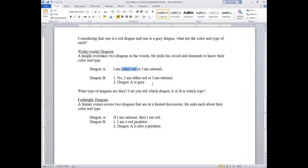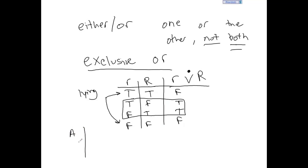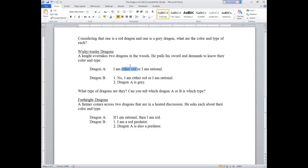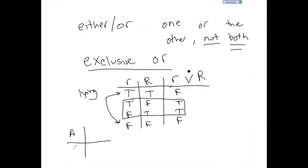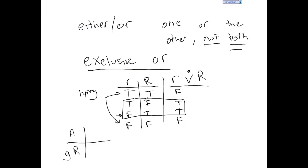He's saying he is either one or the other. If you're lying — if you're not exclusively one or the other — you fall into one of the other cases. If Dragon A is telling the truth, then he is only red or only rational. Suppose A is rational — that falls under the third line, so he's telling the truth. That would make him gray, because he's either red or rational. If he's rational, he can't also be red — if he were both, we'd fall into line one, making the exclusive OR false.